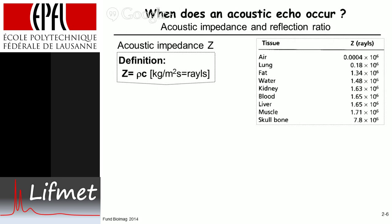This gives you some idea of what the variation in acoustic impedance is between different tissues. You have air, which is very low; lung is a bit higher — lung is not just pure air. Then fat, water, kidney, blood, liver, and muscle are all about the same. Then you have skull bone, which is substantially higher than the others — about a factor of five.